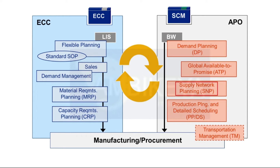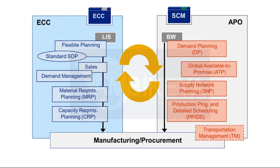Cross-plant planning is possible with supply network planning in APO. Material requirements planning and capacity planning can be executed in ECC or APO. Production execution — in other words, the processing of manufacturing orders such as production or process orders — takes place in manufacturing.